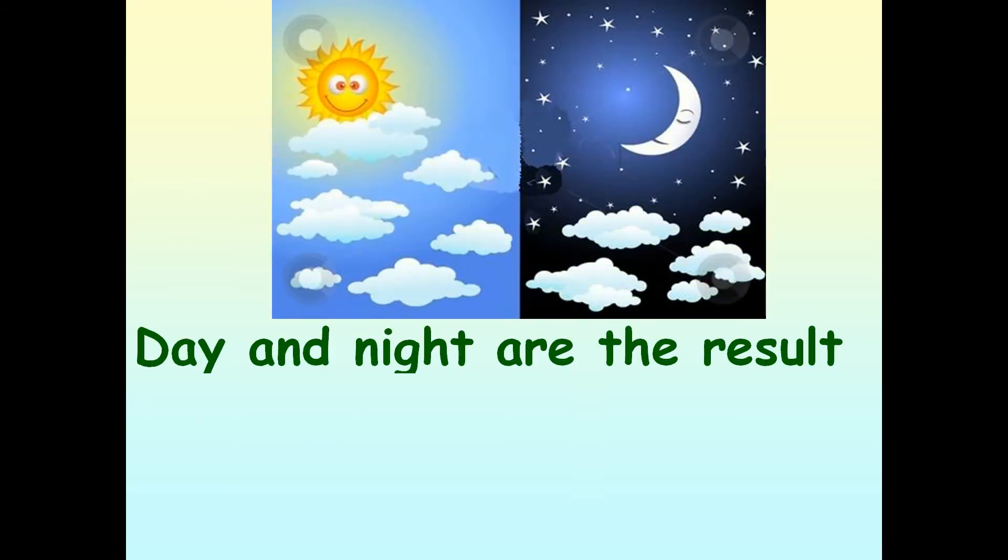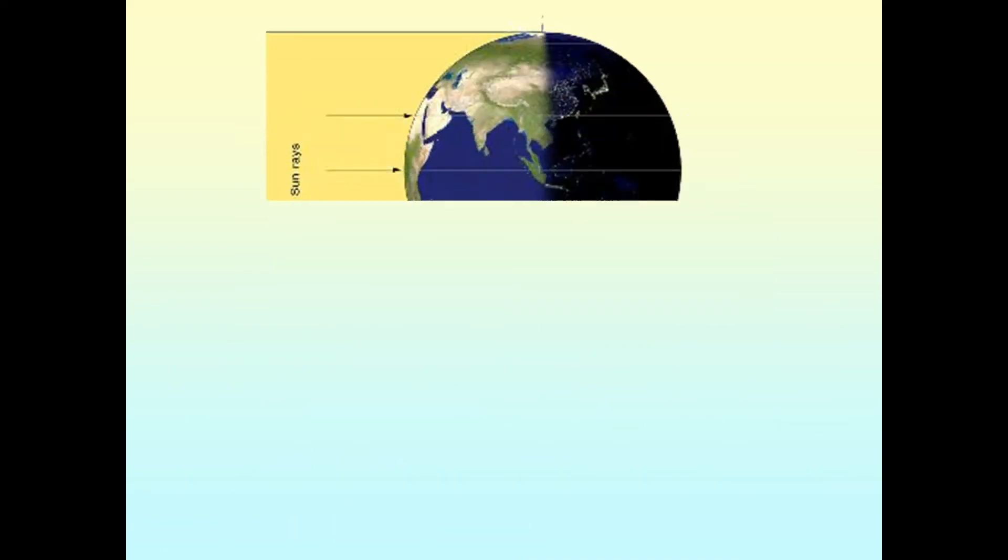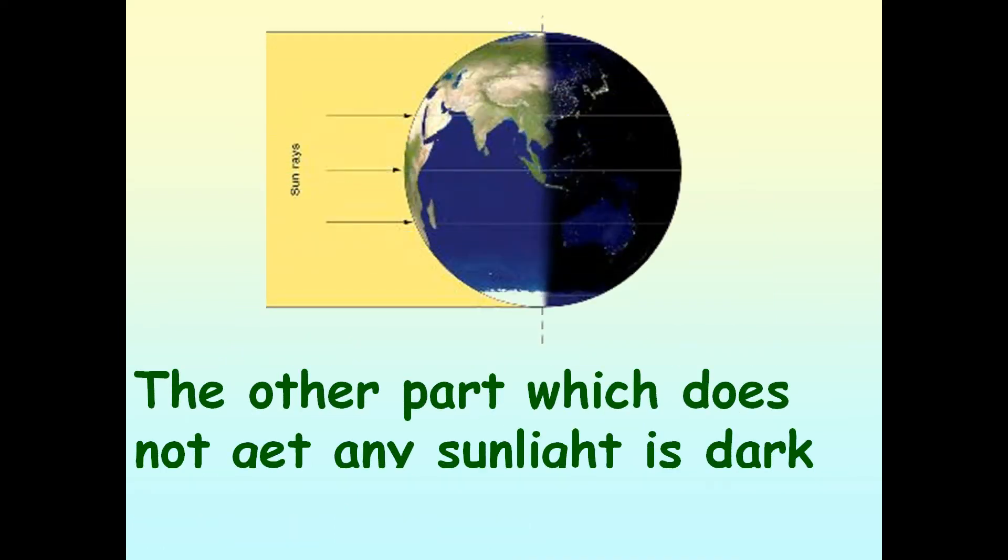Day and night are the result of the earth's rotation. The part of the earth that faces the sun has day. The other part which does not get any sunlight is dark, so it is night there.